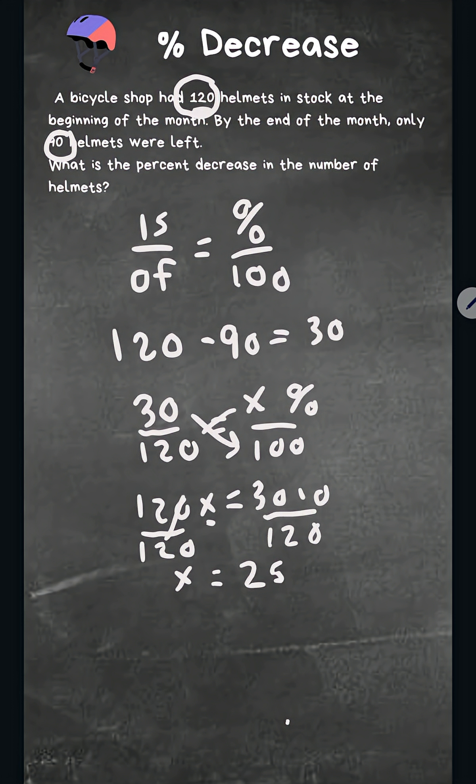So now let's just place it in our original ratio. We have 30 over 120 equals 25.